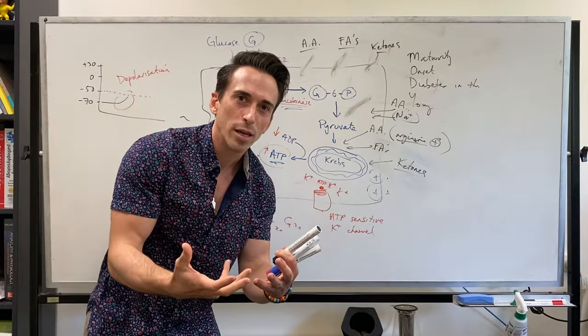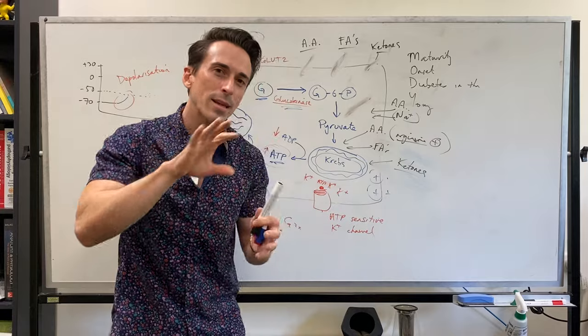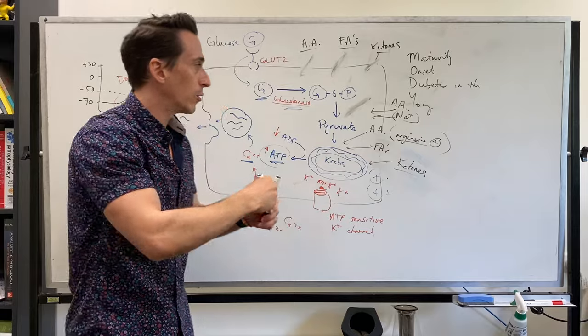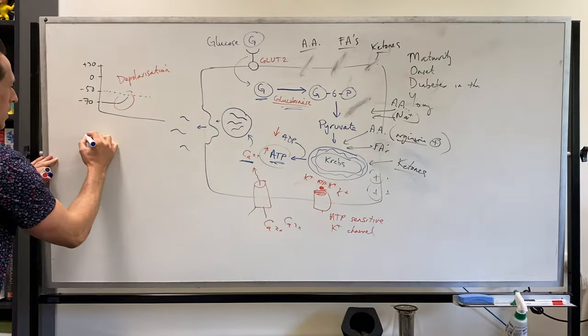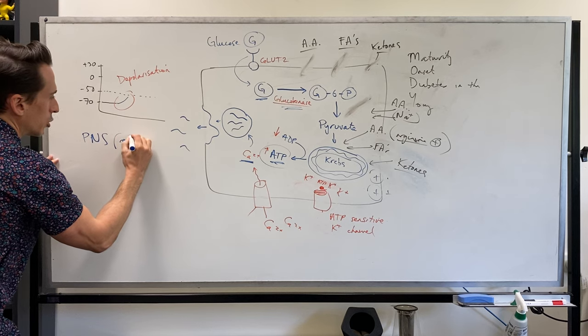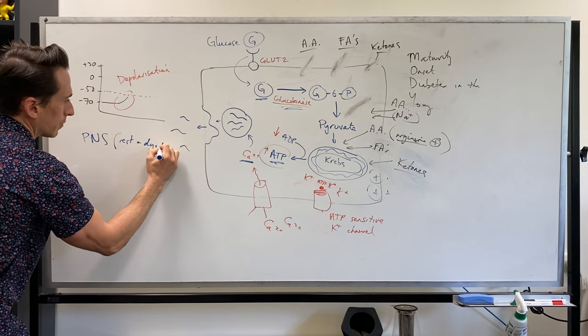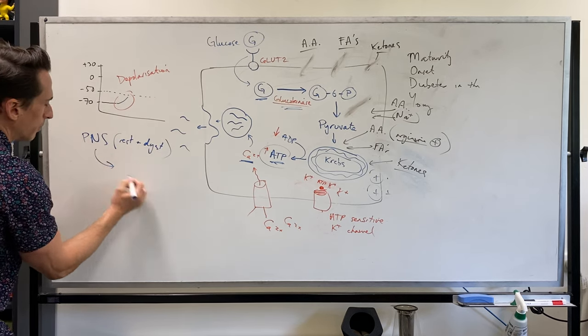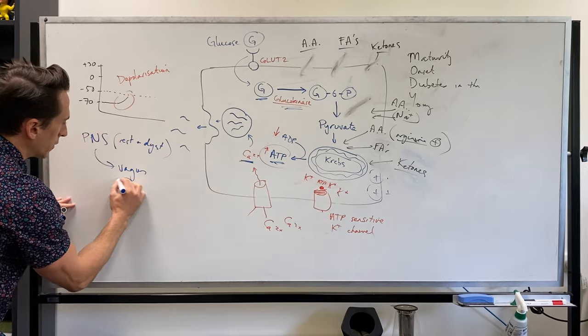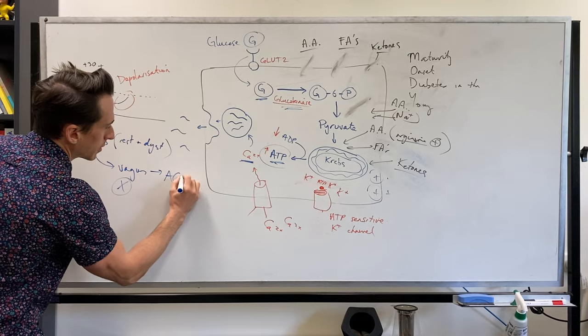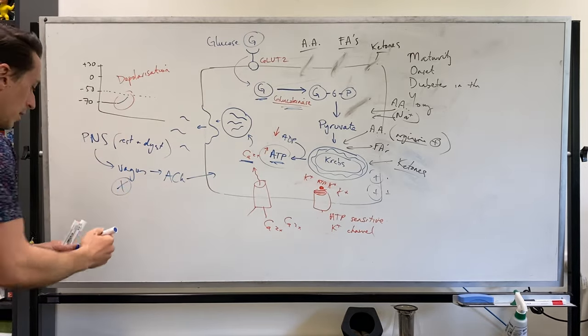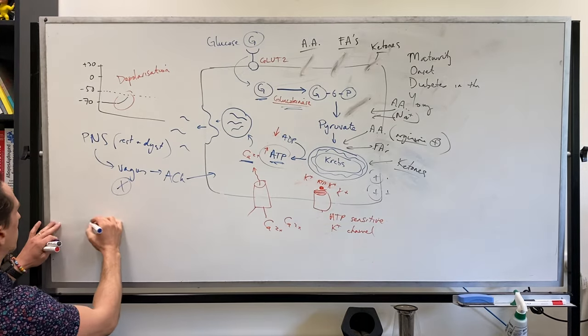But there's other things in the body. So think about the sympathetic, parasympathetic nervous system. They play an important role because what they do is, so the parasympathetic nervous system is the rest and digest. And the rest and digest system is going to function predominantly through that vagus nerve down this area. The vagus nerve is the 10th cranial nerve. It releases acetylcholine and acetylcholine promotes insulin from being released. But it makes sense. Resting and digesting, you want insulin to be released.